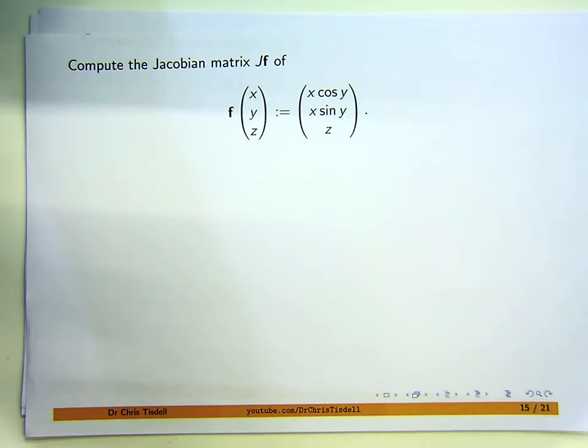In vector calculus and calculus in higher dimensions, we're always trying to extend ideas from basic calculus courses. We know what a derivative is in a first course in calculus, and it has certain properties. What is a derivative in this vector function case? The answer is that the Jacobian is a kind of derivative.